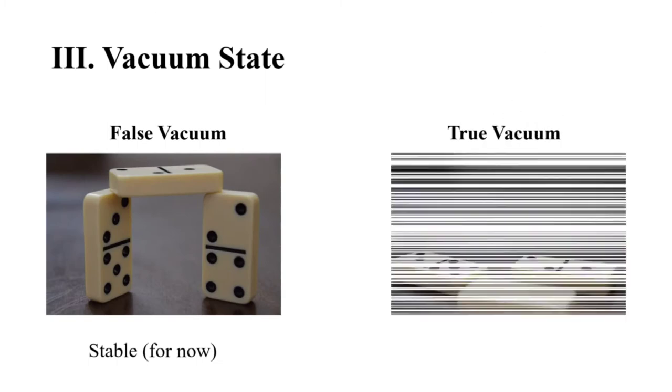There are two types. There is a false vacuum, which is stable in the short term, and the true vacuum, which is completely stable.